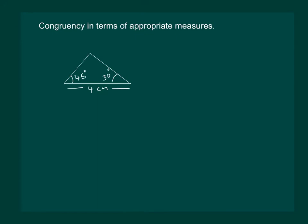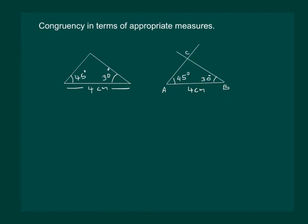But if I give you the measure of another angle on the same base, then of course you can draw a triangle which is congruent to this triangle. You can draw a line segment AB 4cm in length, with A as center using a compass we can construct a 45 degree angle. Similarly, with B as center we can draw a 30 degree angle, and these two angles will intersect at some point C so as to give a triangle ABC which will be congruent to the given triangle.